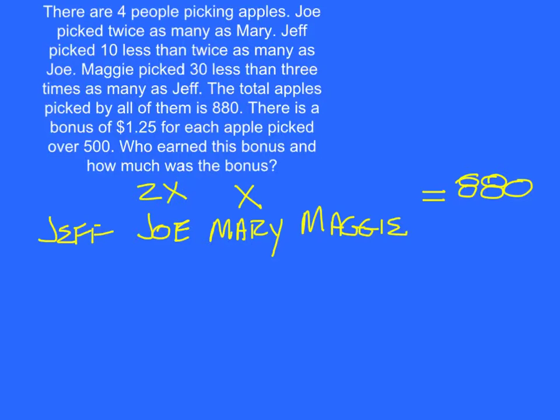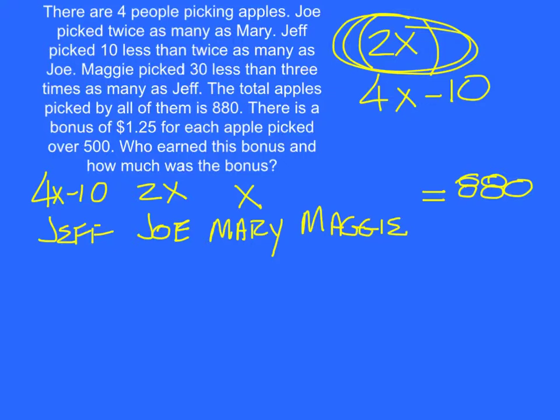Now Jeff picked 10 less—where are we at here? Jeff picked 10 less than twice as many as Joe. So what would we put for Jeff? Well, here's Joe. And Jeff picked 10 less than twice as many as Joe. Twice as many as Joe would be what? Because Joe is 2X. So what's twice 2X? 4X. And then Jeff picked 10 less than that. So he would end up being 4X minus 10. Remember, whatever Joe is, you have to double that. You can't just make it 2X because Joe's already 2X. So if you double 2X, then it's 4X. And 10 less than that would be minus 10.